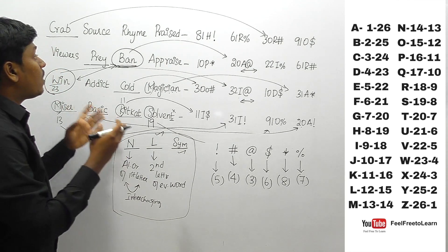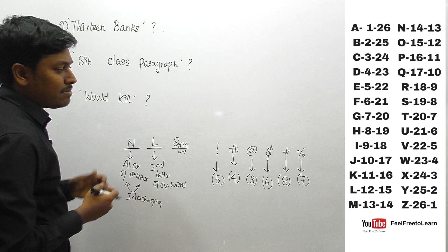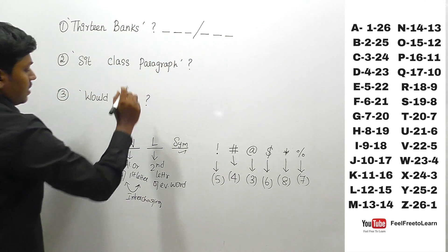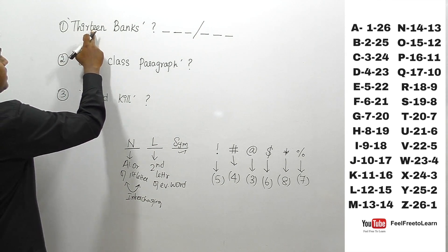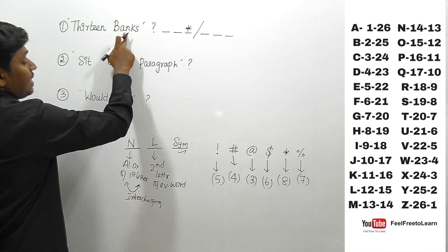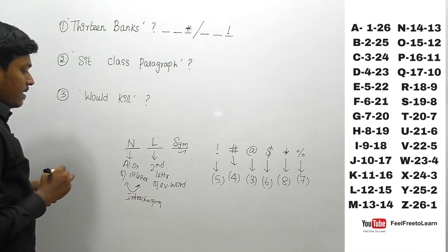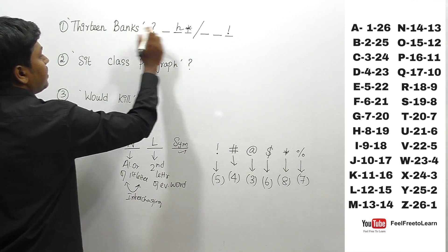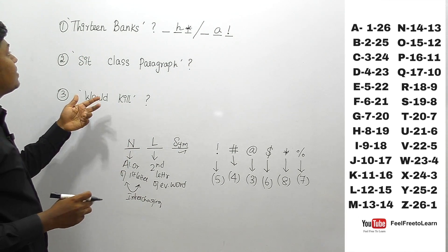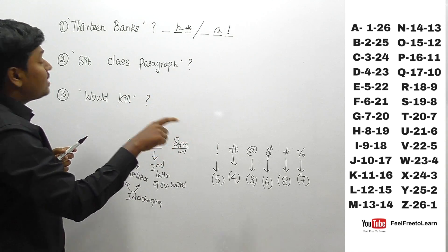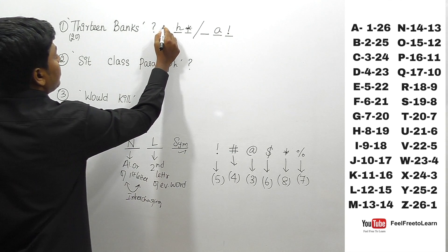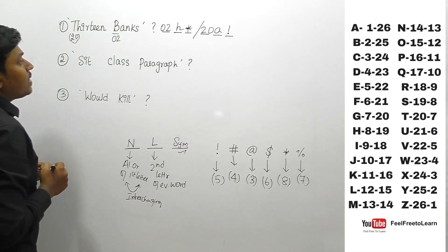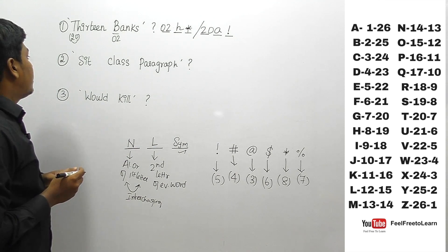Now applying the pattern to the questions. Question 1: find the code for two given words. The first word is 8 letters so uses star (*); the second is 5 letters so uses (!). Second letters are H and A respectively. For the number: T=20 alphabetically, unchanged is 20 since single digit stays; B=2 reversed is 20. So codes are: 02 H * and 20 A !.